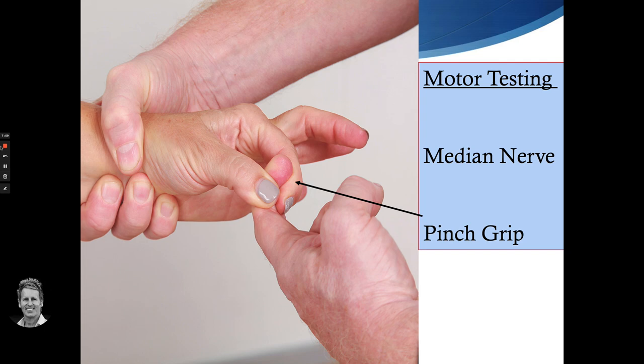One way of testing the median nerve is to do a pinch grip test. You have the patient pinch the thumb and index finger together and then resist that motion, using the pad of the thenar eminence muscles. If it is weak, it may not simply be a muscle weakness — it might well be due to entrapment of the median nerve. This is a very simple clinical test you can perform.